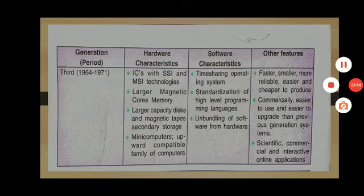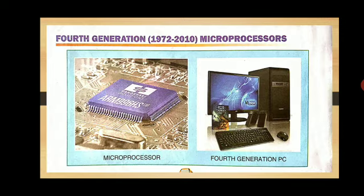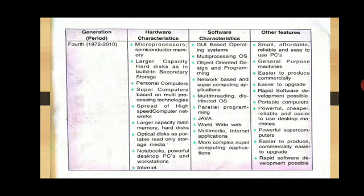Now moving to the fourth generation. The fourth generation starts from 1972 to 2010. In this generation, the microprocessor was the key hardware — a small and inexpensive type of chip. Let's see what type of hardware was used in the fourth generation.